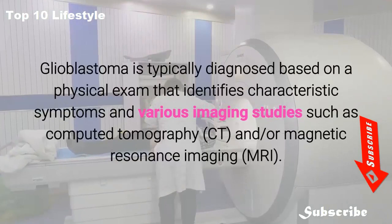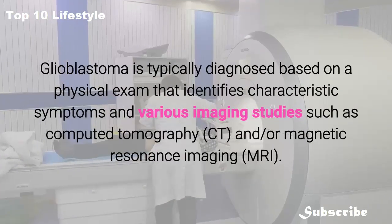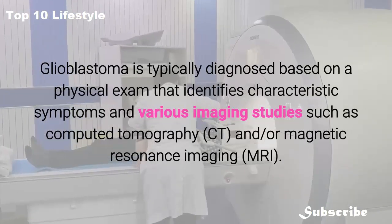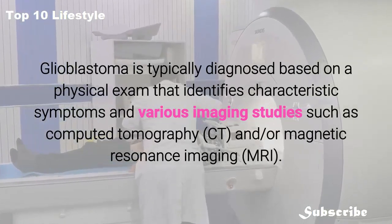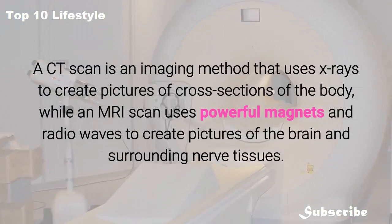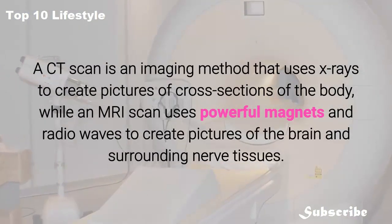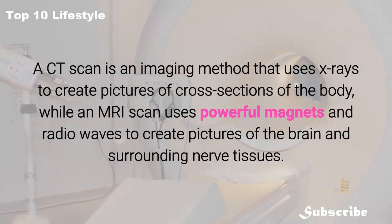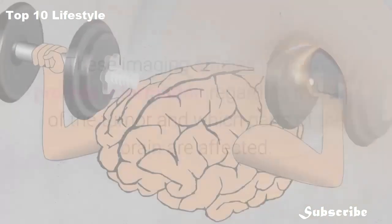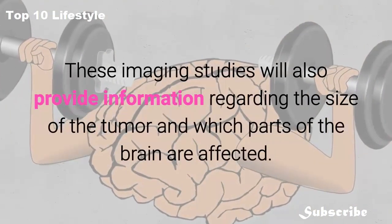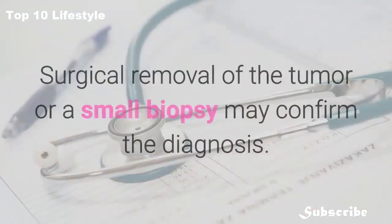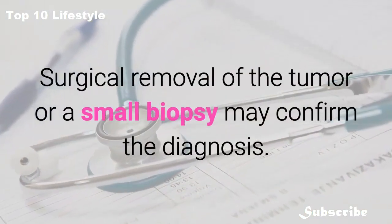Glioblastoma is typically diagnosed based on a physical exam identifying characteristic symptoms and various imaging studies such as computed tomography (CT) and magnetic resonance imaging (MRI). A CT scan uses X-rays to create cross-sectional images of the body, while an MRI uses powerful magnets and radio waves to create pictures of the brain and surrounding nerve tissues. These studies provide information about tumor size and which brain areas are affected. Surgical removal or a small biopsy may confirm the diagnosis.